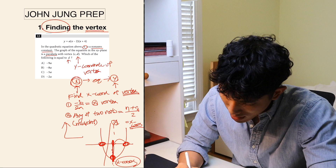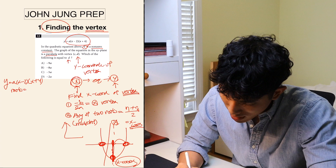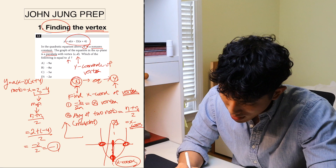So how do we find the x-coordinate of a vertex using the two roots? You add root 1 plus root 2 and divide by 2 — that gives you the x-coordinate. For this question, we'll use the second method since it takes less work. The equation is y = a(x − 2)(x + 4), so the roots are x = 2 and x = −4. Finding the midpoint: (2 + (−4)) / 2 = −2 / 2 = −1. So −1 is the x-coordinate of the vertex.